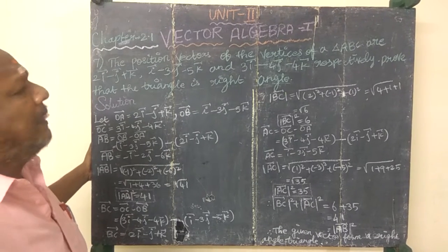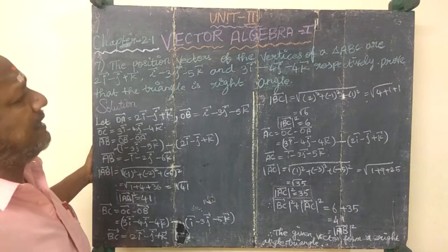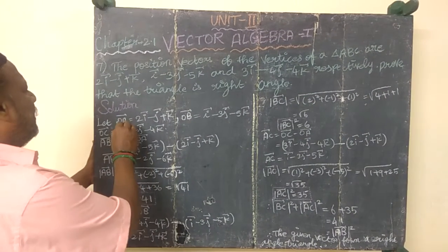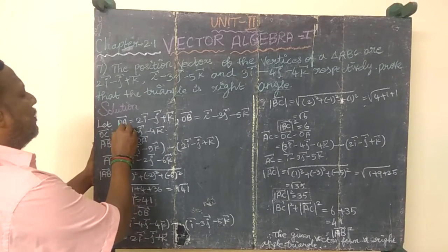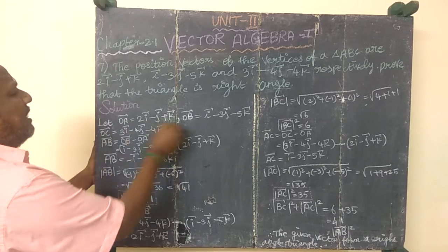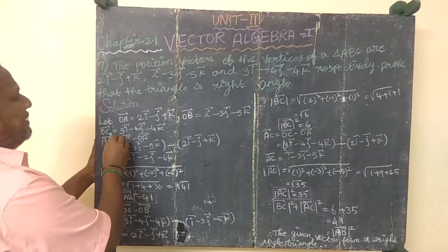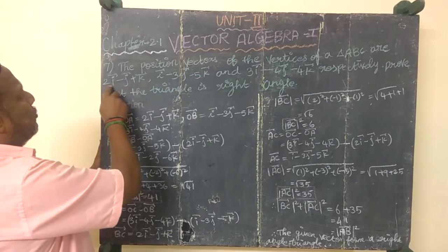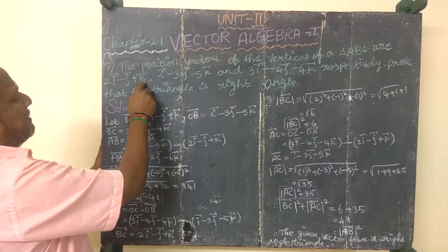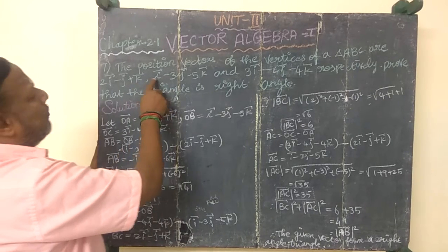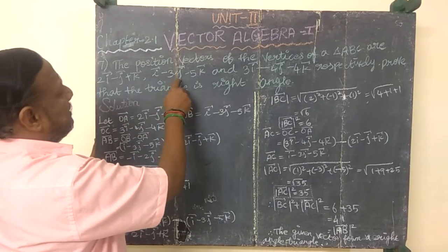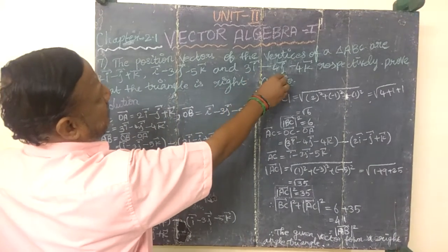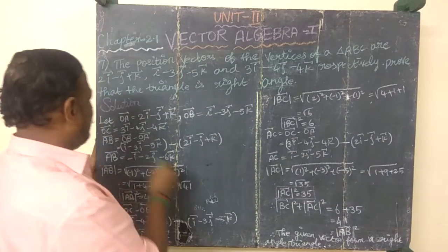To prove this is a right-angled triangle, we take the vertices. The first vector OA is 2i minus j plus k, OB is i minus 3j minus 5k vector, and OC is 3i minus 4j minus 4k vector.